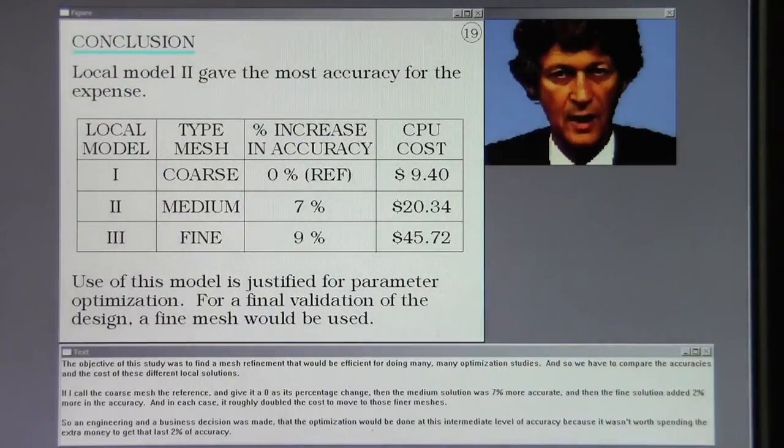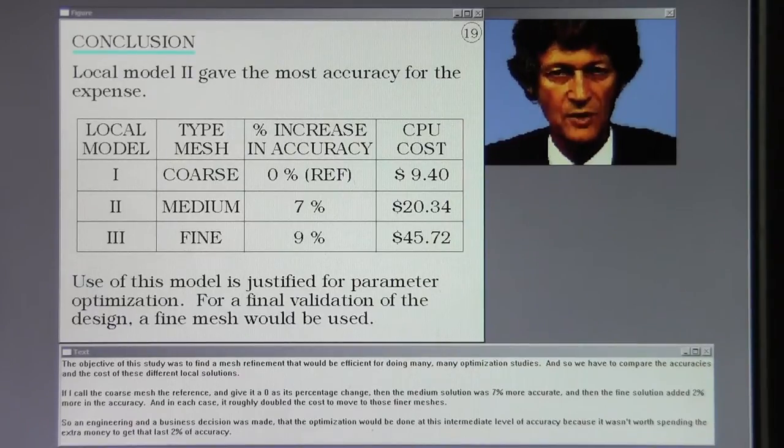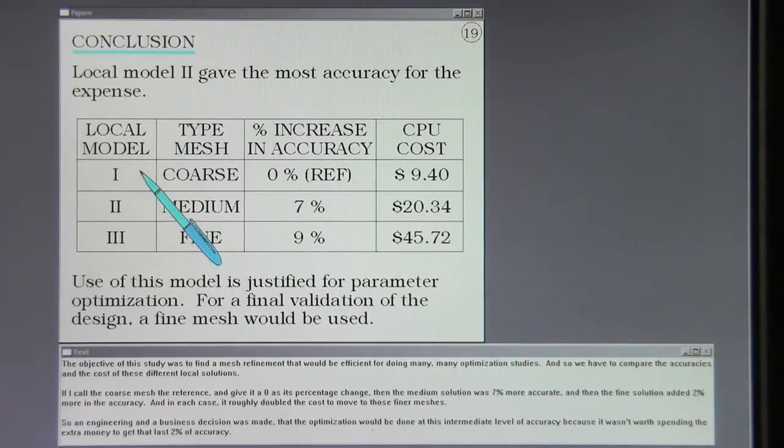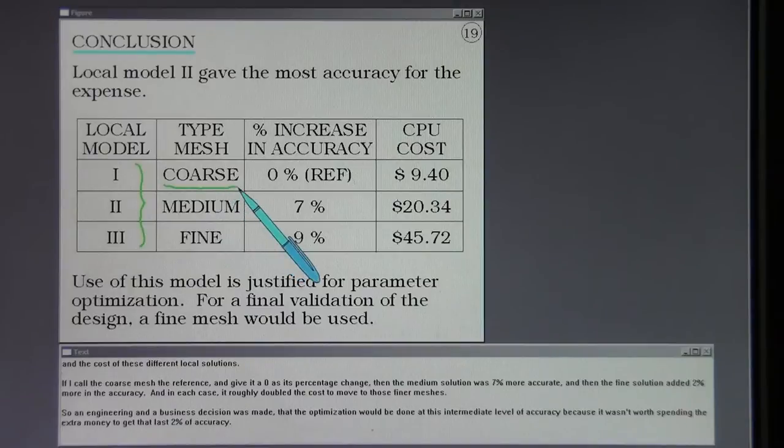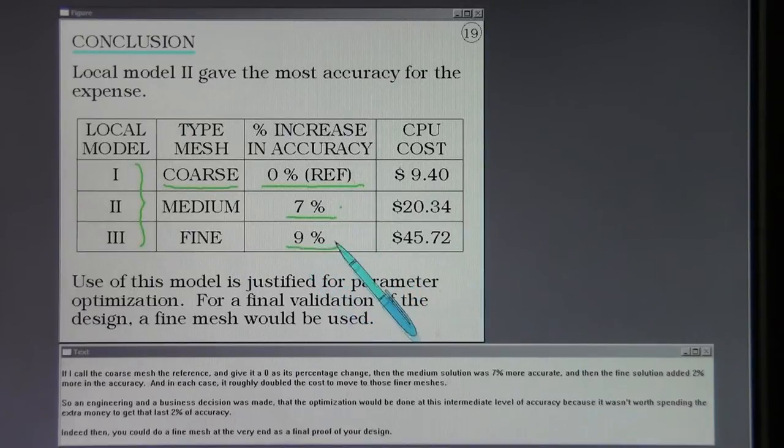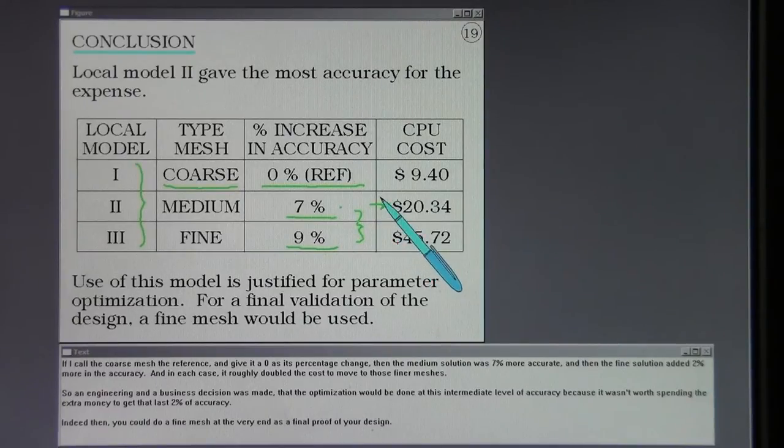The objective of this study was to find a mesh refinement that would be efficient for doing many, many optimization studies. And so we have to compare the accuracies and the cost of these different local solutions. If I call the coarse mesh the reference and give it a zero as its percentage change, then the medium solution was 7% more accurate and then the fine solution added 2% more in the accuracy. And in each case it roughly doubled the cost to move to those finer meshes. So an engineering and a business decision was made that the optimization would be done at this intermediate level of accuracy because it wasn't worth spending the extra money to get that last 2% of accuracy. Indeed then you could do a fine mesh at the very end as a final proof of your design.